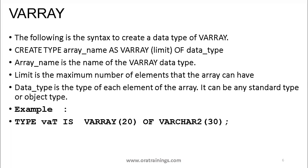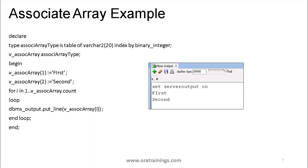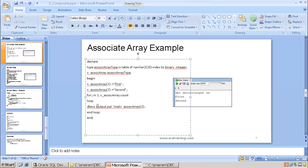Let's see examples of each one. In the associative array example, in the declare section, we declared a type associative array as TABLE OF VARCHAR2 — meaning this data type can handle any number of names. In the begin section, we assigned values: index 1 gets 'first', index 2 gets 'second', and so on, then printed them. This is a simple example showing how, for each index, you can assign a variable of a given data type. You can also do a table of employee records by mentioning TABLE OF employee record and assigning column values.